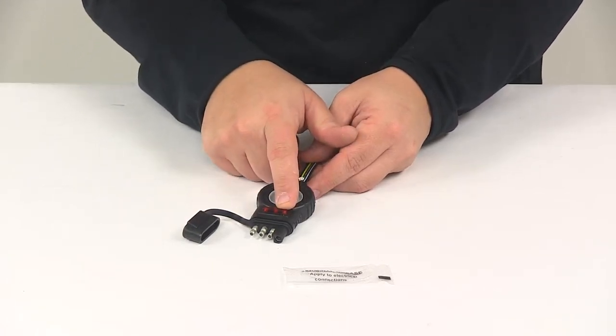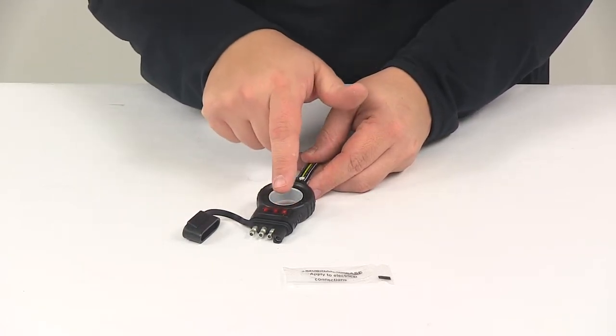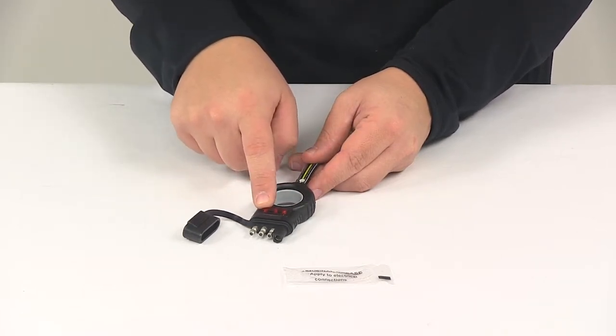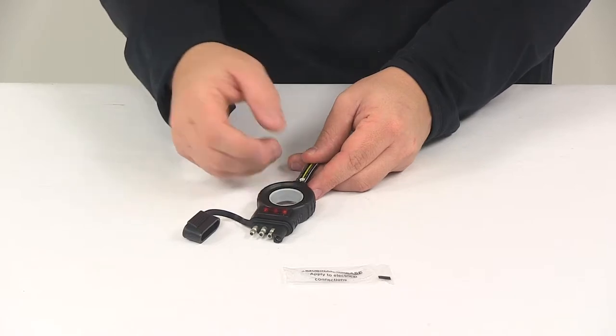So you're going to have TM, which is going to be your taillights or marker, LT for left turn, RT for right turn, and then when you apply your brakes, both RT and LT should light up.